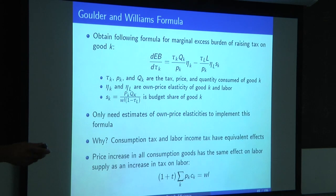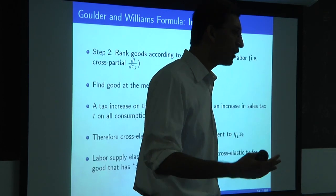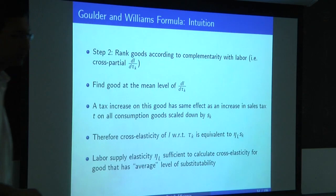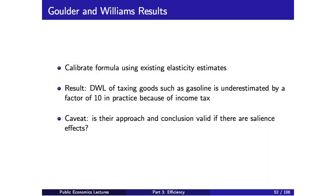They calibrate the formula using existing elasticity estimates of these two parameters and show that the deadweight loss of taxing goods like gasoline is probably underestimated by a factor of 10 in practice because of the pre-existing income tax. People have focused on the deadweight cost of gas taxes within that market, but have been missing the first-order part of the picture: the labor market. That's really important given existing estimates of the labor supply elasticity, which we'll discuss at length later.